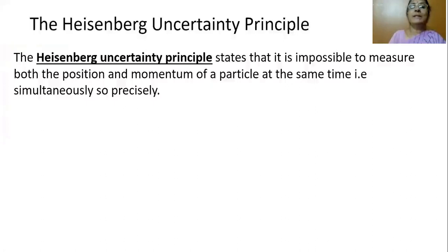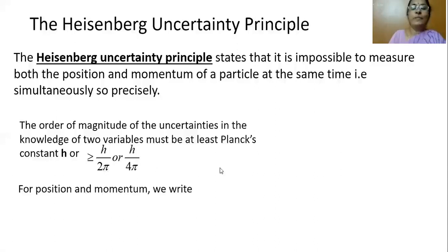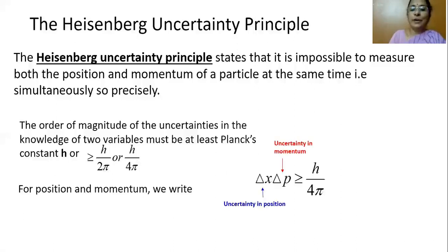The Heisenberg uncertainty principle states that it is impossible to measure both the position and momentum of a particle simultaneously and precisely. The product of uncertainties in position and momentum must be greater than or equal to h/4π, where delta X is the uncertainty in position and delta P is the uncertainty in momentum.